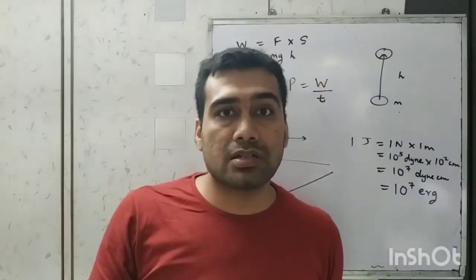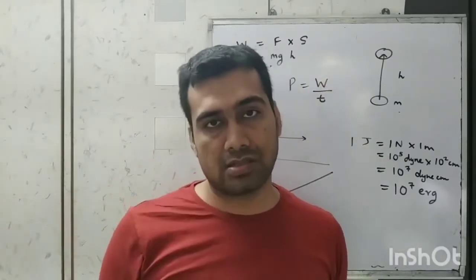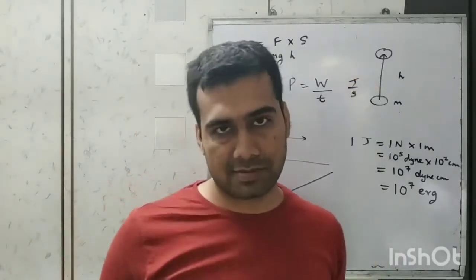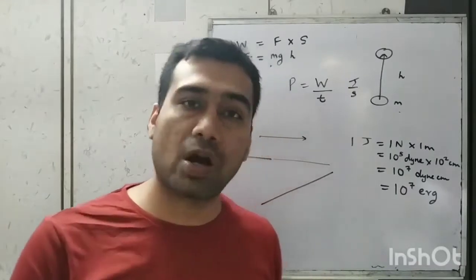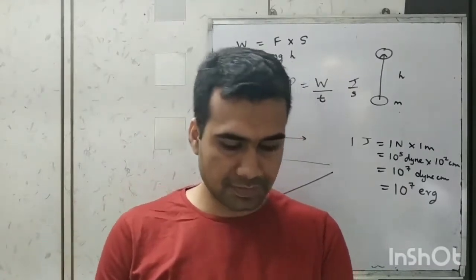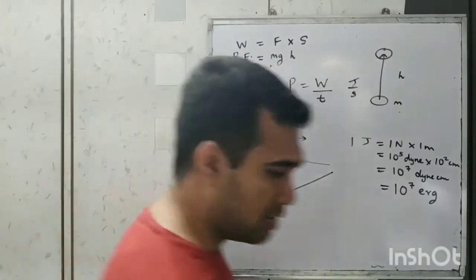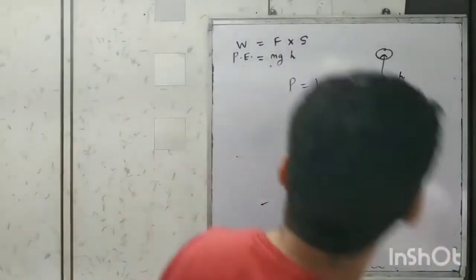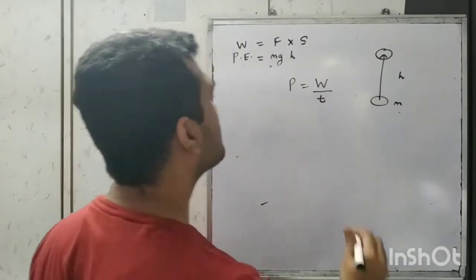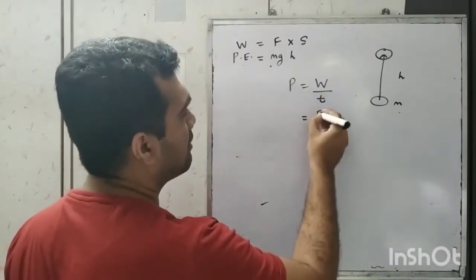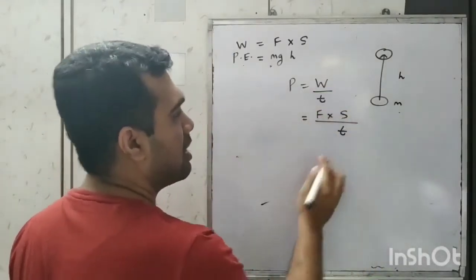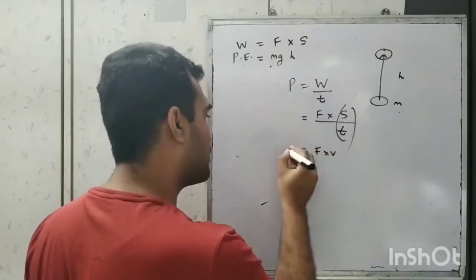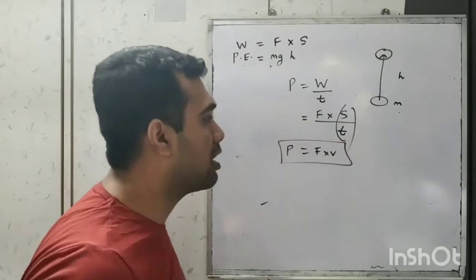The faster you do work, the more power is exerted. The unit of power is joule per second, which is also called watt. One kilowatt is one thousand watts. Power = work / time, and since work = F × S, and displacement / time = velocity, we get another derived formula: power = F × v.